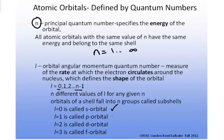When L is equal to 1, it's called the P orbital. When L is equal to 2, it's called the D orbital. And when L is equal to 3, it's called the F orbital. Each of these orbitals, S, P, D, and F, have characteristic shapes.